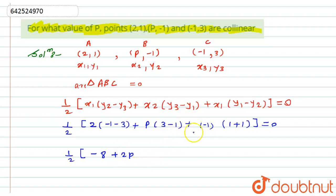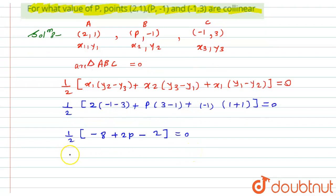Now this minus sign, this plus sign will become minus, and 1+1 will be 2, which will be equal to 0. Now I will take 2 common from all of them, so it will become 2÷2 in bracket, this will be -4+P-1 is equal to 0. This